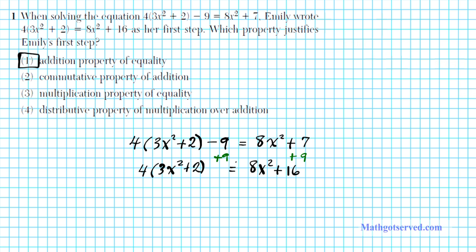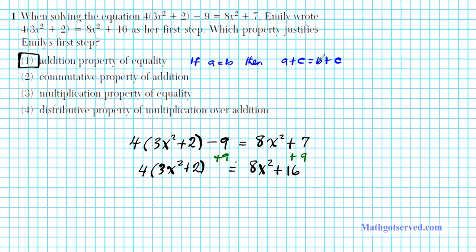Let's do a quick review of our properties so that we can know for sure that this is the correct answer. The addition property of equality basically states that if a equals b plus c, then a plus c equals b plus c. So basically if you add the same thing to both sides, equality is preserved. That's the addition property of equality.